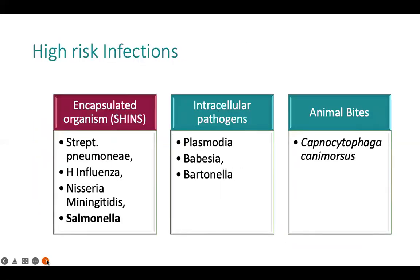Which organisms cause infection in asplenic patients? It is mainly encapsulated organisms, remembered by the mnemonic SHINS: Streptococcus pneumoniae, Haemophilus influenzae, Neisseria meningitidis, and Salmonella. Intracellular pathogens like Plasmodium, Babesia, and Bartonella are also associated with severe sepsis. We should not forget animal bites — dog and cat bites are associated with severe sepsis in asplenic patients due to Capnocytophaga.